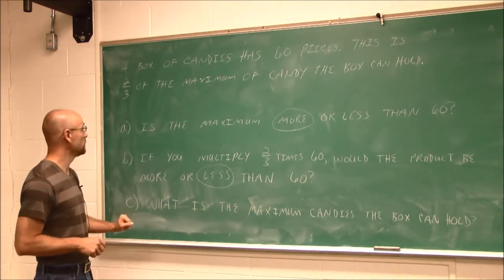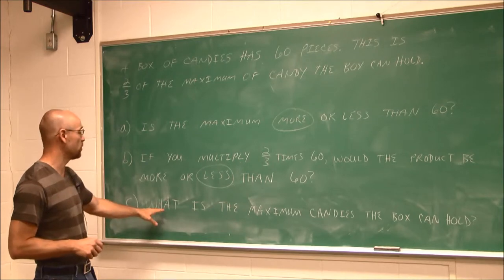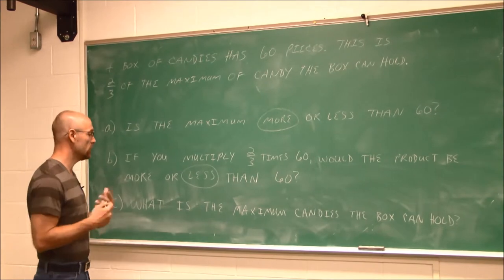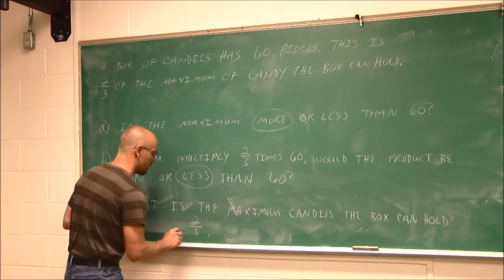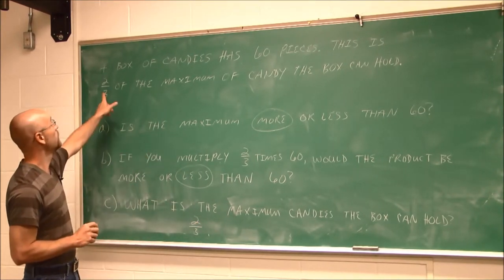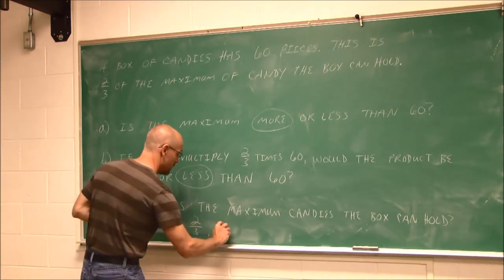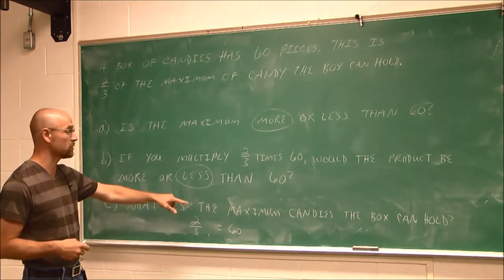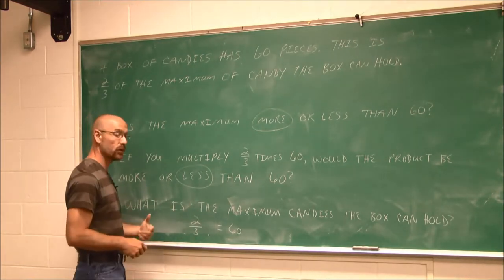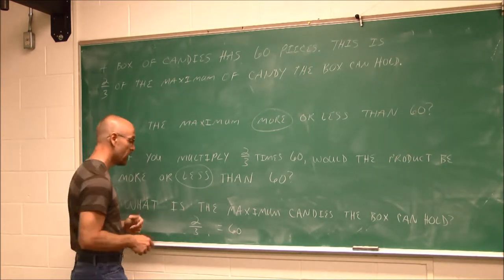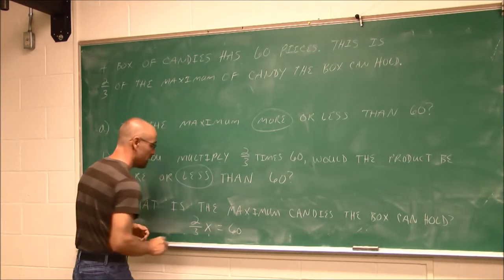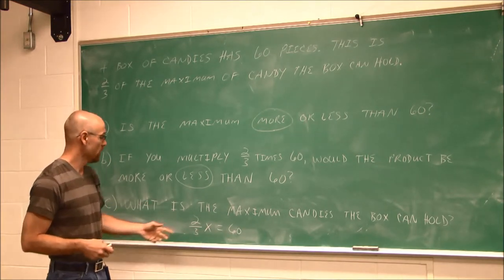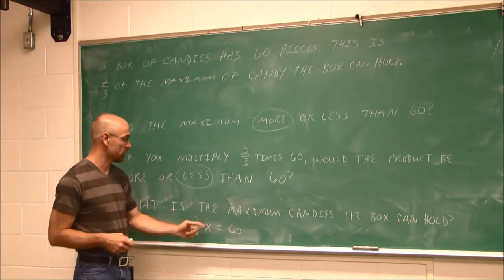Now we're ready to answer the question: what is the maximum candies the box can hold? If 2 thirds is only 60 candies — 2 thirds of the maximum we're looking for — then 2 thirds of the maximum is 60. The word 'of' tells us to multiply. I'm going to use x as my variable, because I don't know what the maximum is. So 2 thirds of x equals 60 is our equation.